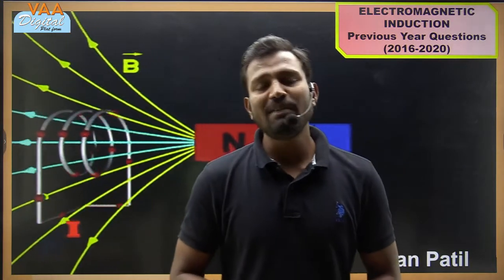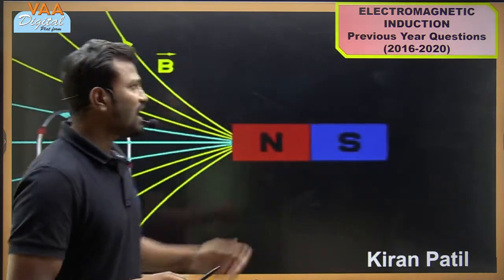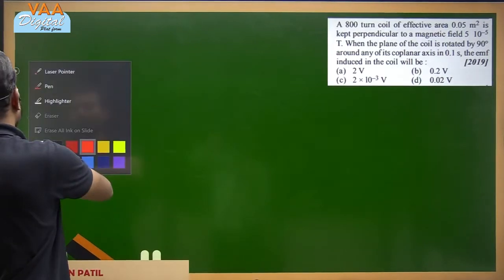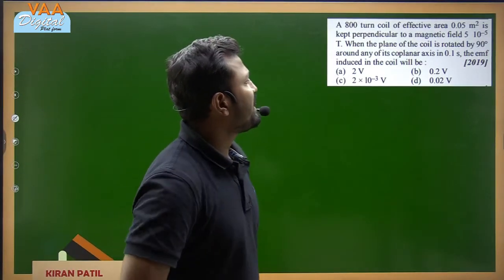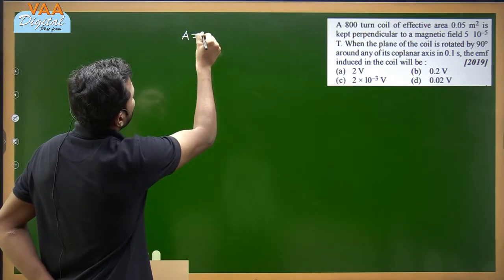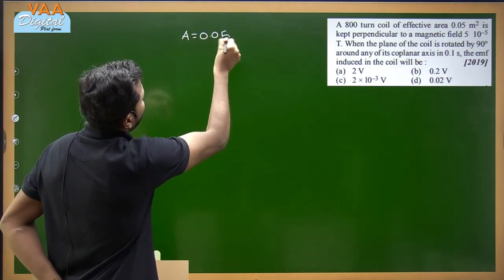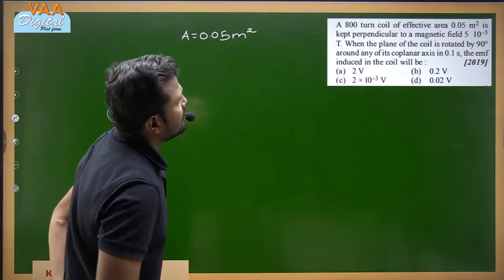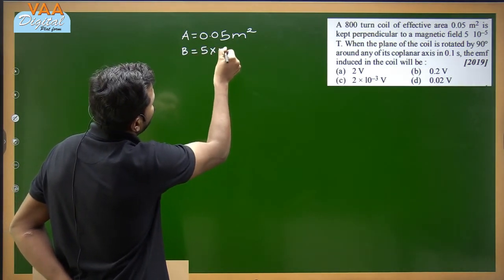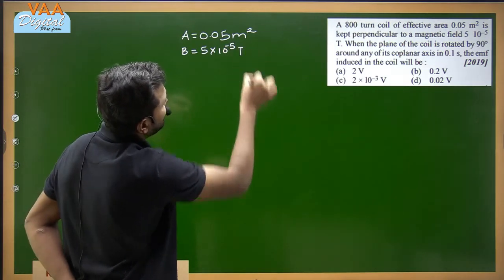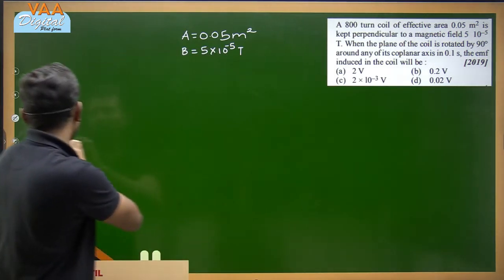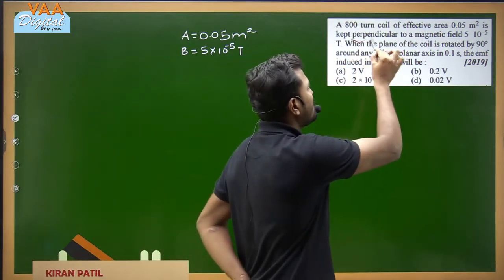Without wasting much of our time, let us start with the first question asked in the NEET examination. An 800-turn coil of effective area 0.05 m² is kept perpendicular to a magnetic field B = 5×10⁻⁵ Tesla. When the plane of the coil is rotated by 90 degrees — initially the plane is perpendicular to the field.